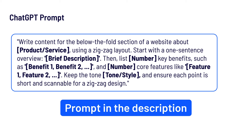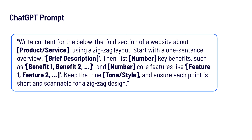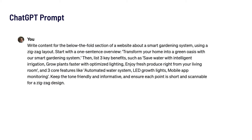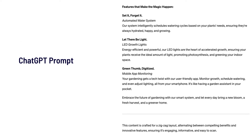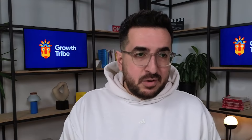I have a prompt that can help you write scannable content in a zigzag format. It reads: write content for the below-the-fold section of a website about your product using a zigzag layout — start with a one-sentence overview, then list three to five key benefits. I used this with an example of a smart gardening system, and got my zigzag copy. Feel free to test yours on Usability Hub to see if people like it.